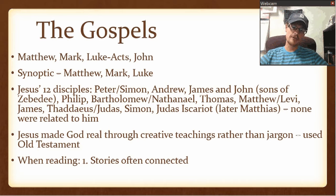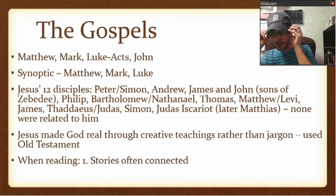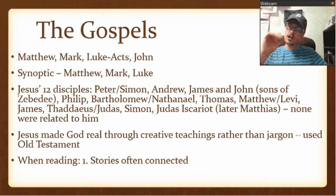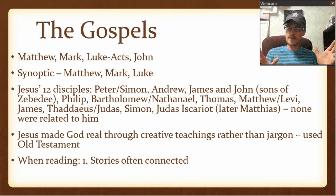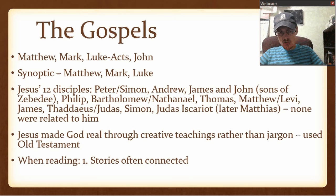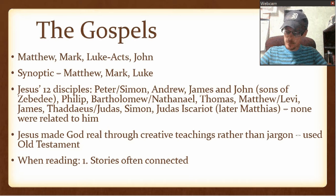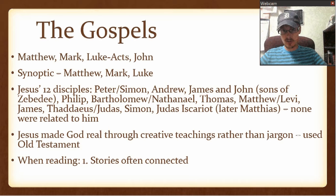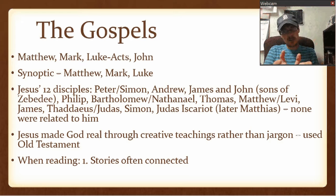When reading the Gospels, first notice that the stories are connected — they're placed in an order that tells a story. For instance, in Luke, he traces Jesus' genealogy all the way back to Adam — the first man — showing that Jesus was fully human. But then in the very next part, it goes to Jesus' temptation, showing that Jesus was fully human but without sin. He taught that simply by the order of events, by how he ordered his Gospel.